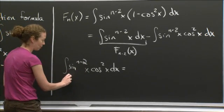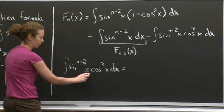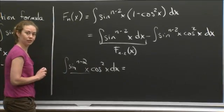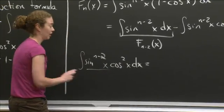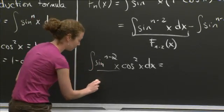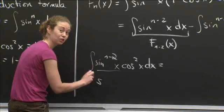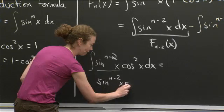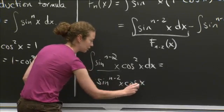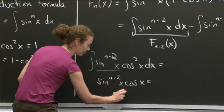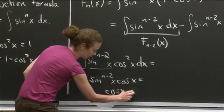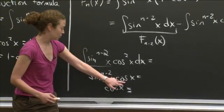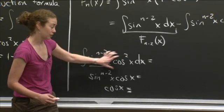What I'm going to do — it's a bit tricky — is take all of the sine x's and one of the cosine x's and make that one thing, and make the other cosine x another thing. We'll write them down first and then figure out which is a good u and which is a good v prime. Sine to the n minus 2 x times cosine x is one piece, and the other cosine x is the second piece. That product gives us sine to the n minus 2 x times cosine squared x, which is what we have inside the integral.